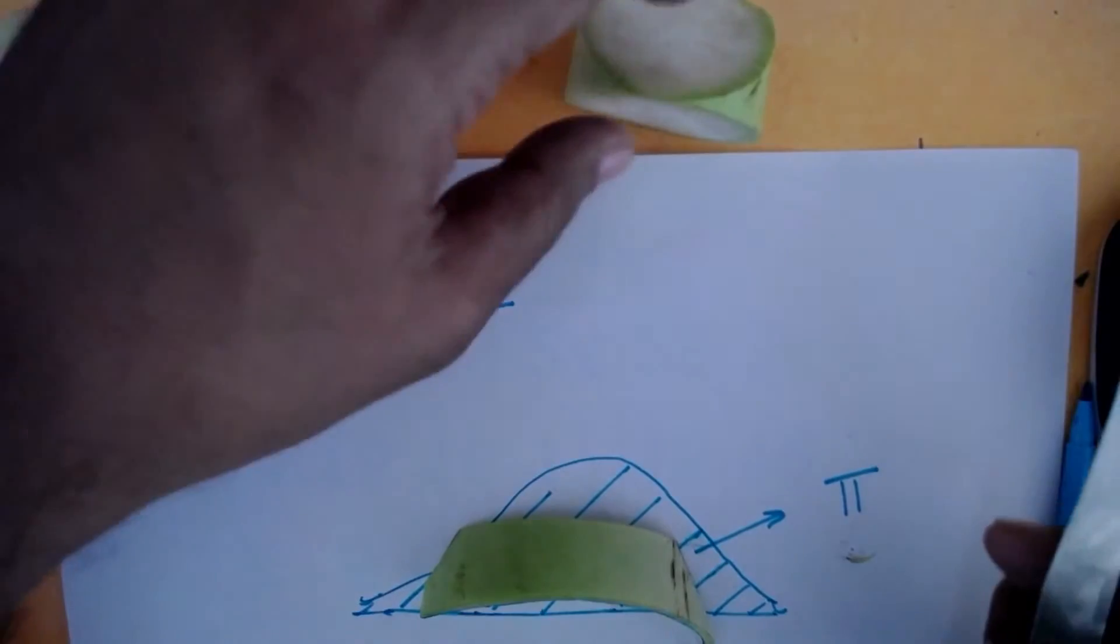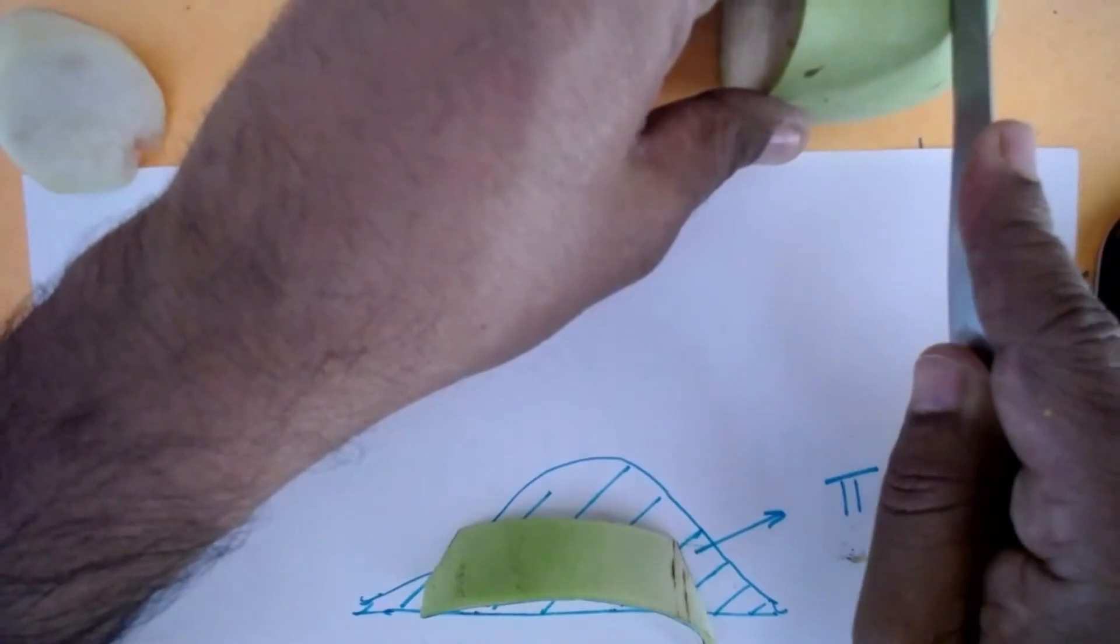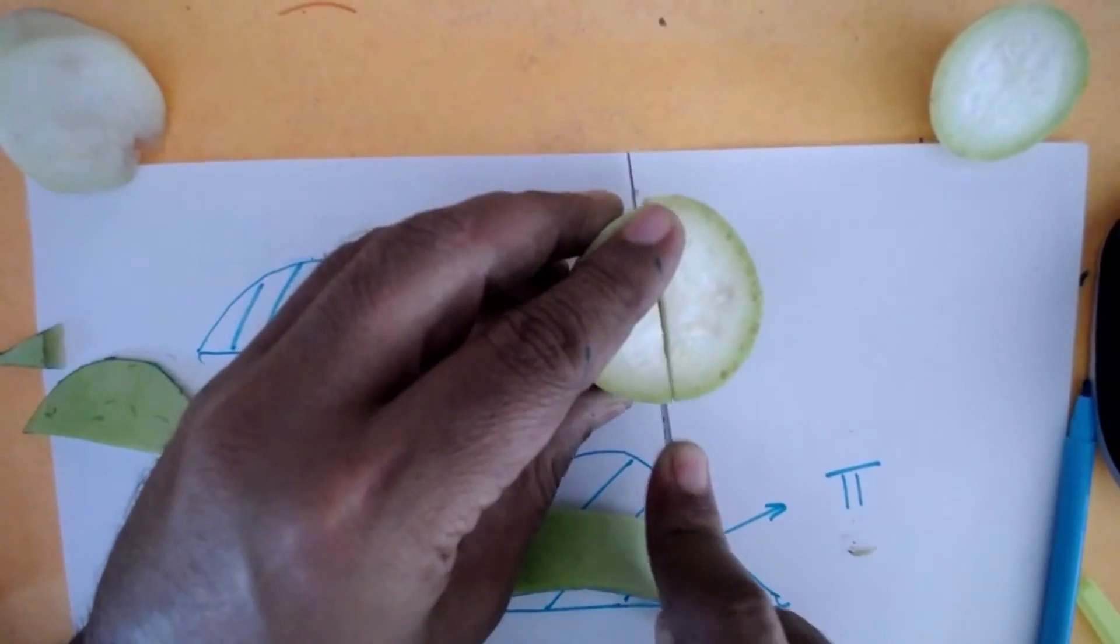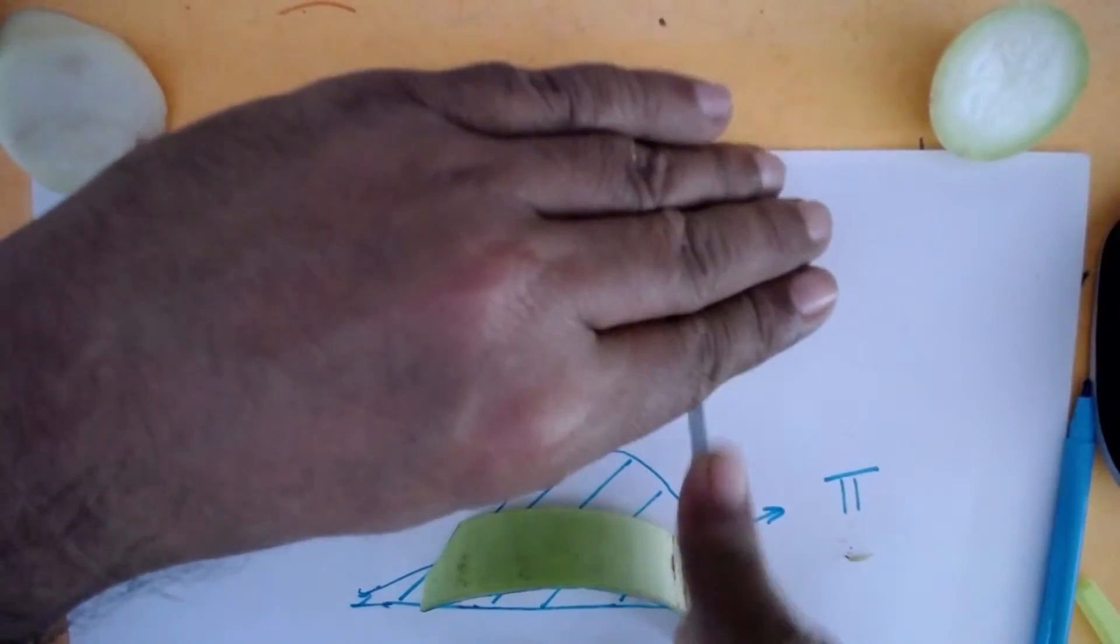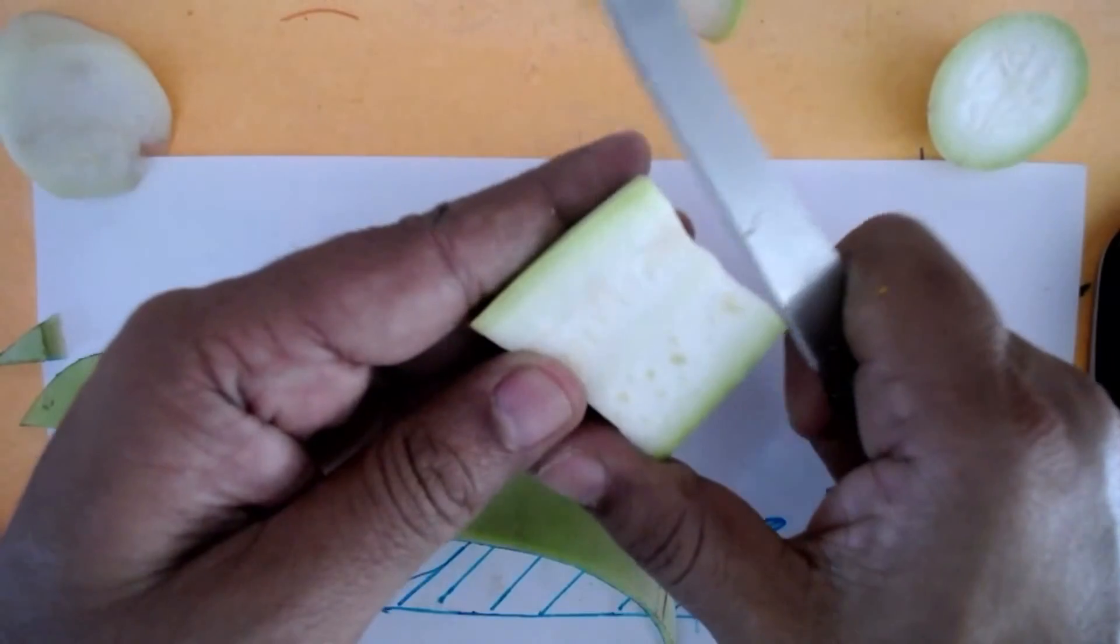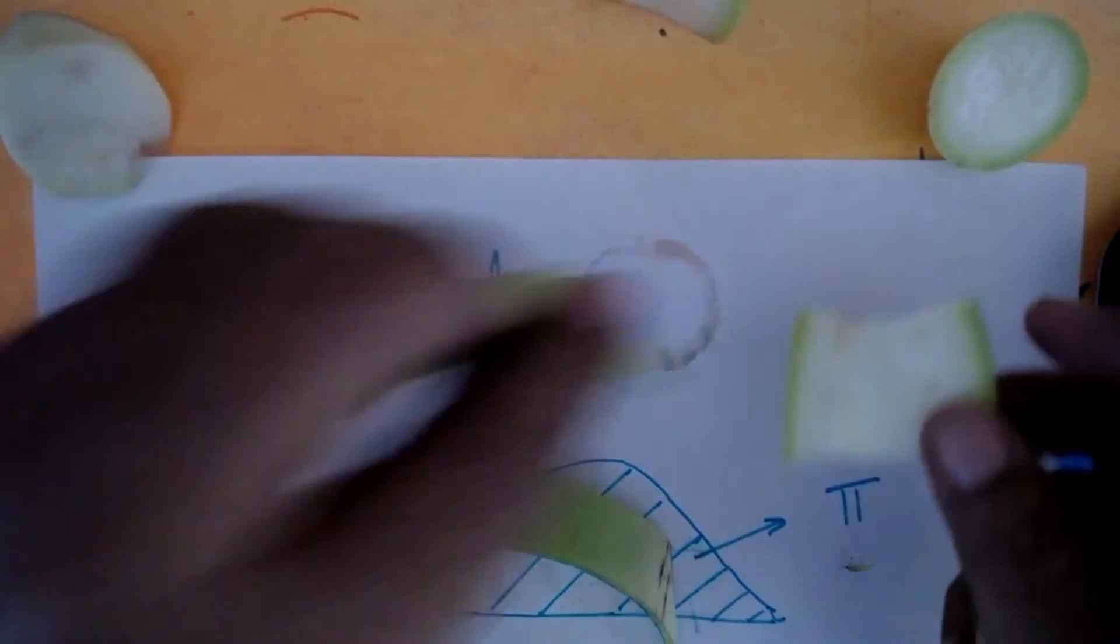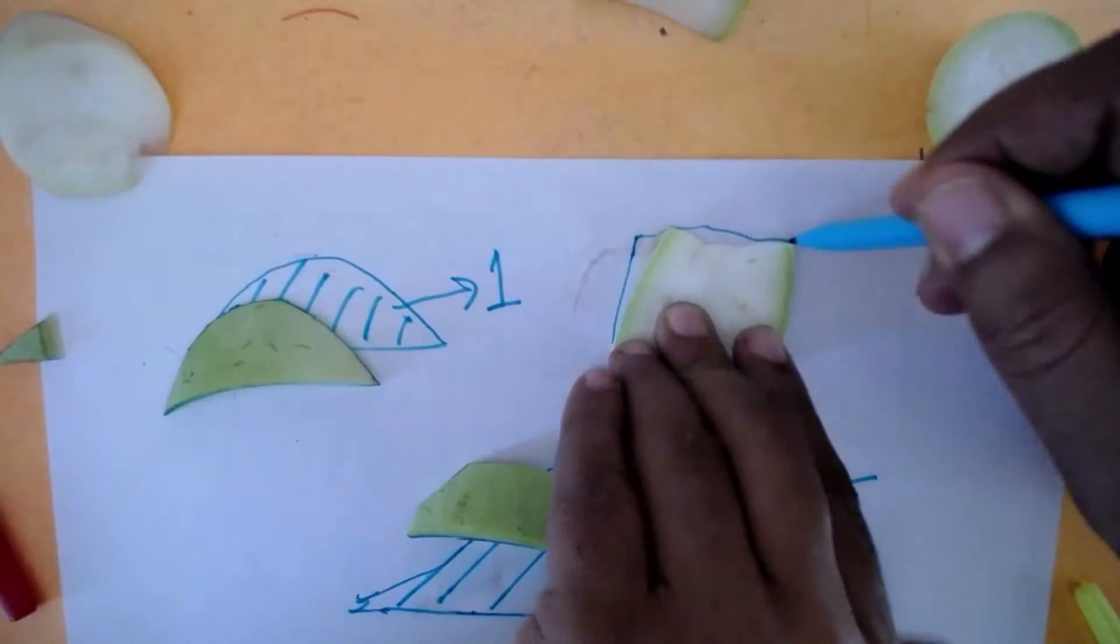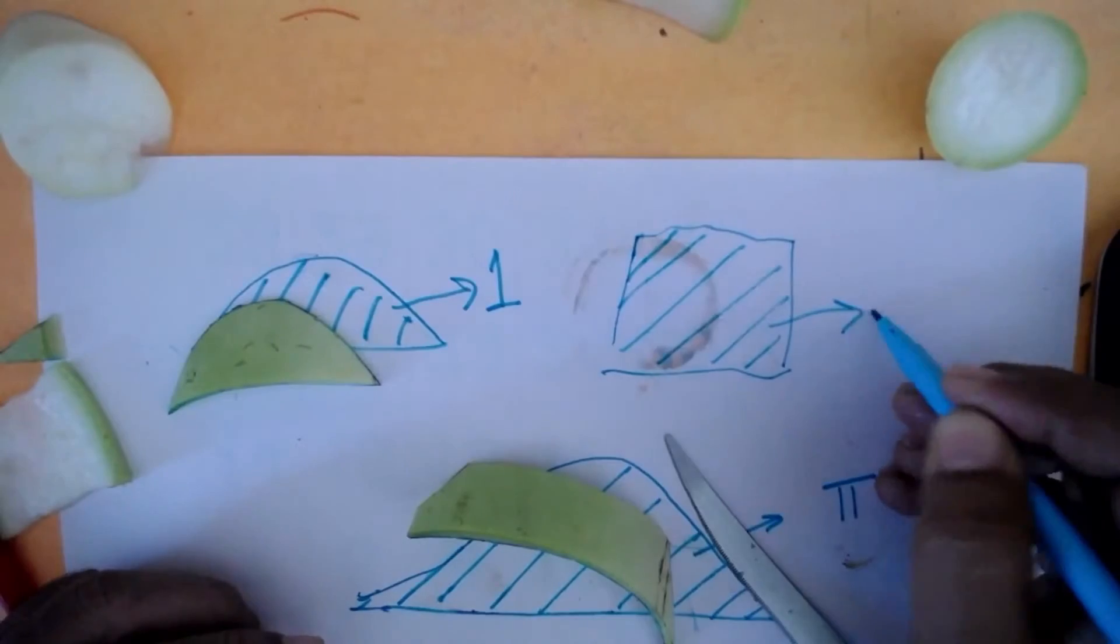Something more interesting happens. If I took the same cylinder and cut it in half from the middle vertically, I get a square. This square of course has no π, and this also has area 1.